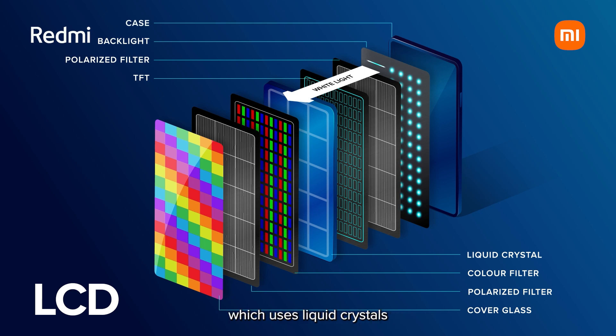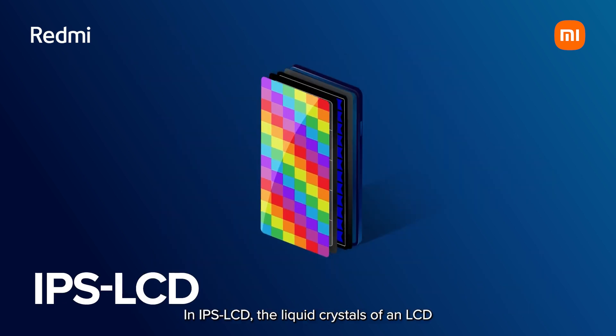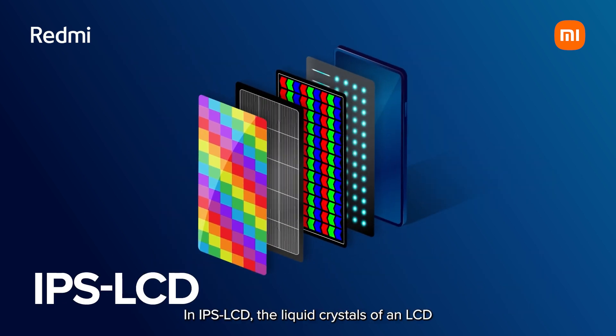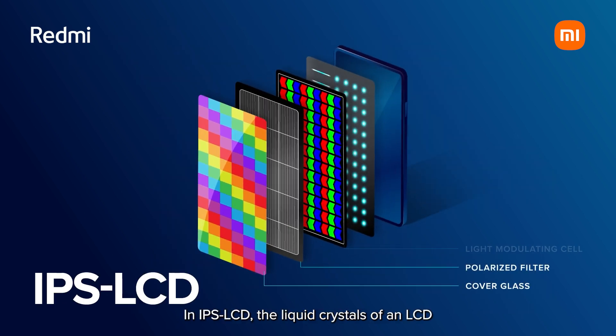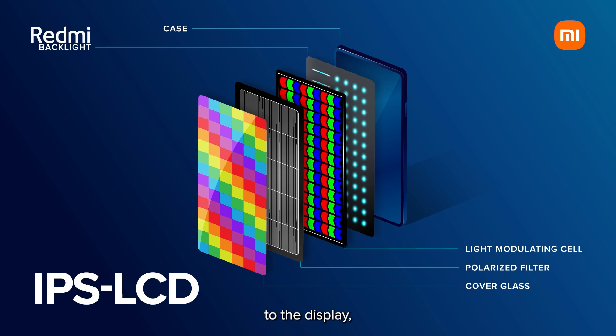Liquid crystal displays, or LCD as they're more popularly known, is a type of flat panel display which uses liquid crystals in its primary form of operation. On LCD displays the light is typically generated from a backlight. In IPS LCD, the liquid crystals are aligned to the display, resulting in superior viewing angles.